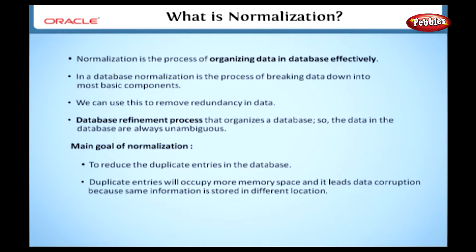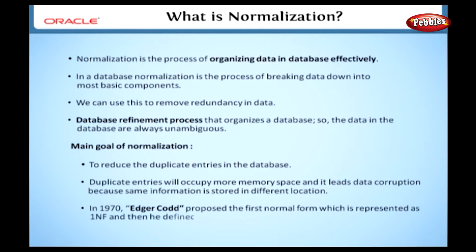In normalization, there is a set of guidelines to be followed to avoid these problems. In 1970, Edgar Codd proposed the first normal form, which is represented as 1NF, and then he defined normal forms 2 and 3.